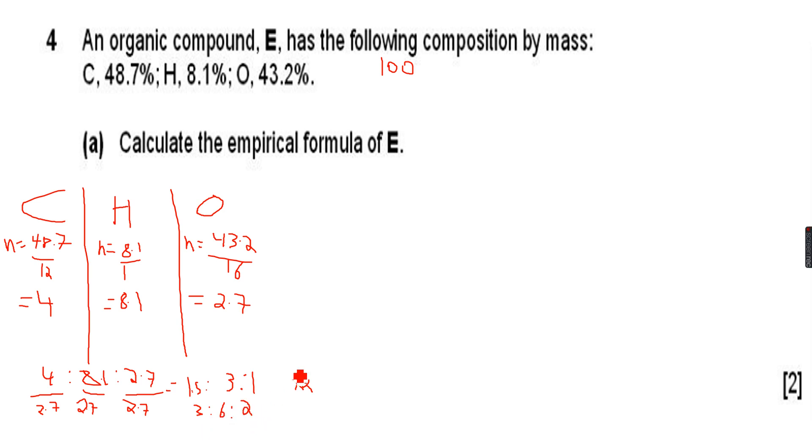Now we've got the simplest whole number ratio, so the empirical formula of E will be equal to C3H6O2. So this is the empirical formula of E, the simplest whole number ratio.